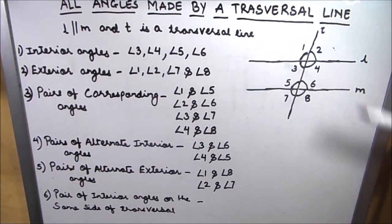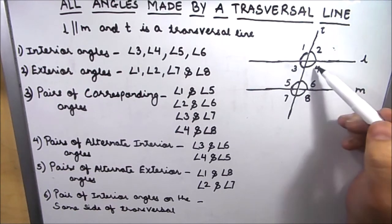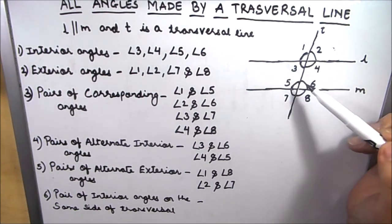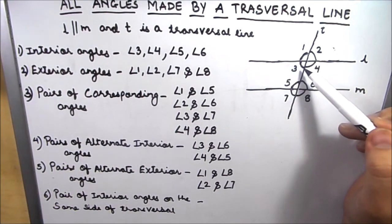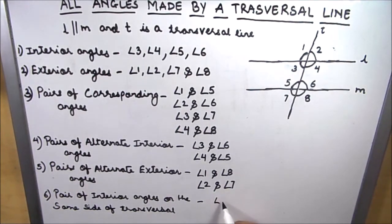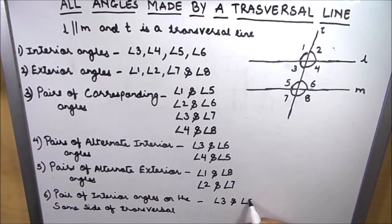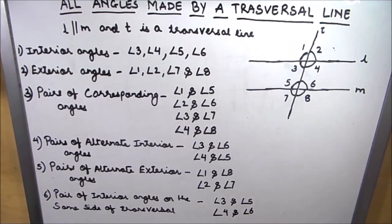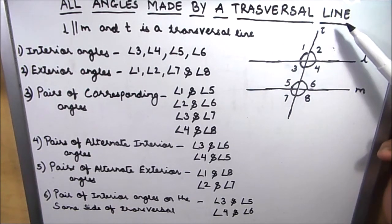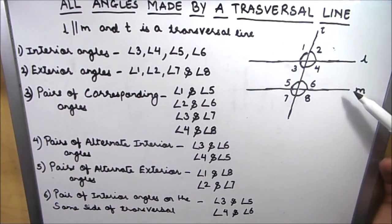The next category is the pair of interior angles on the same side of the transversal. As the name suggests, they are on the same side of the transversal and they exist in pairs. Angle 3 and angle 5 make the first pair, and angle 4 and angle 6 make the second pair.